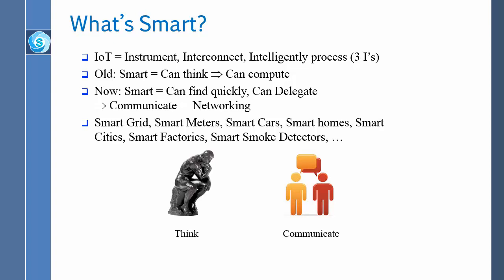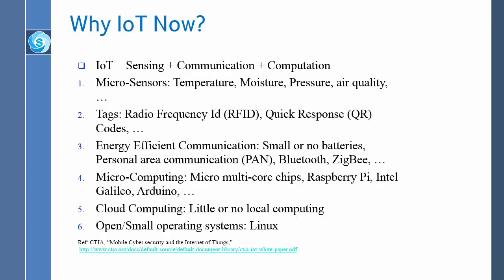Smartness is networking. Because if you are networked, if you can communicate, you can always get the job done. It's not what you know, it's who you know. Think about a person with hundreds of books on the desk — not very smart because they're not connected. On the other hand, a person with one little smartphone in their pocket is smart because they can find the answer right away — they are connected to Google, which handles storage and computing.